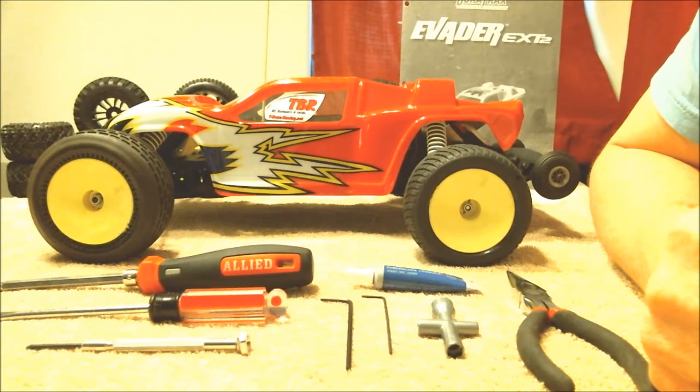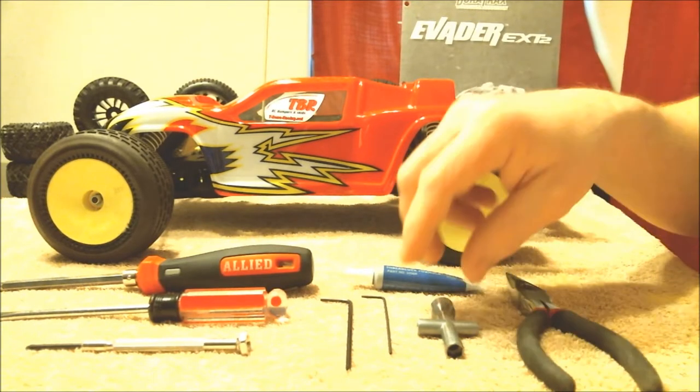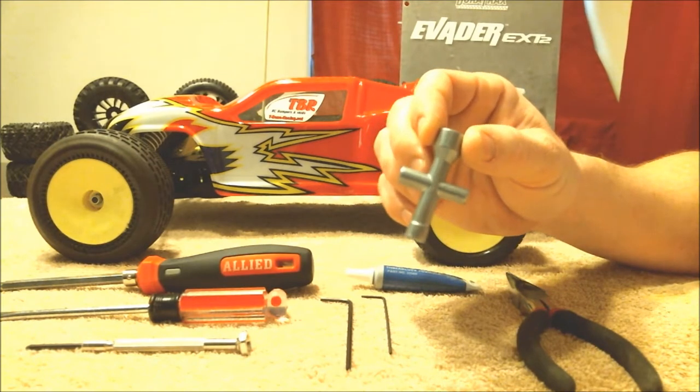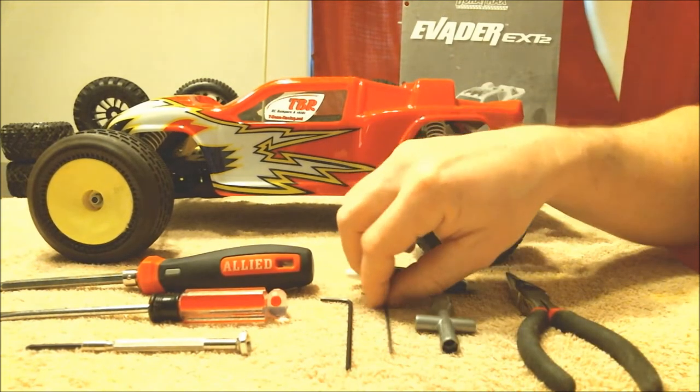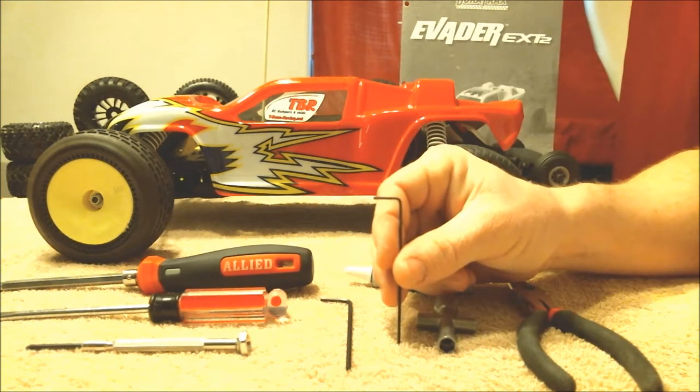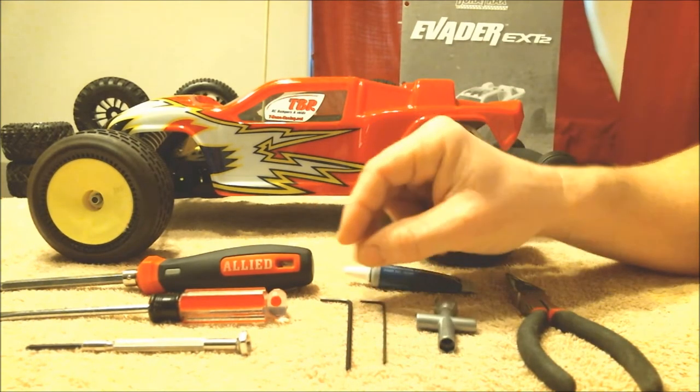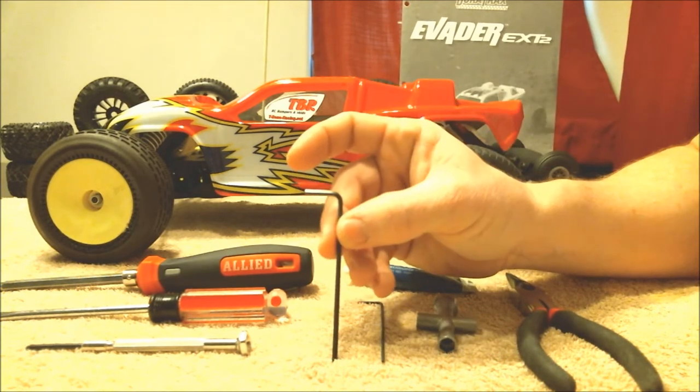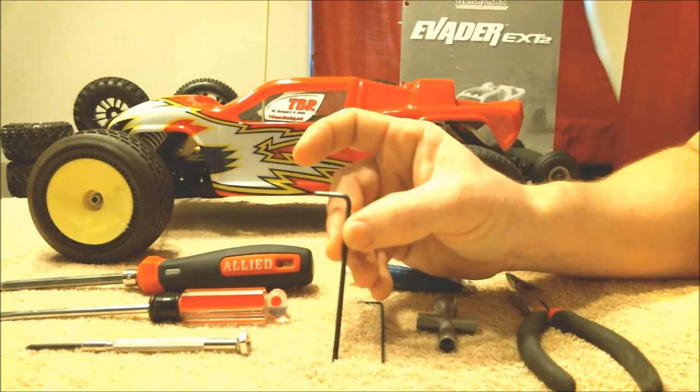So to begin with, I'll go ahead and go over the tools we need. First thing, of course, you're going to need your multi-wrench that comes with the Evader. Going to need a 1.5 millimeter Allen wrench to remove the pinion gear from the motor. Going to need a 2.5 millimeter Allen wrench to remove the motor from the motor plate and the transmission.